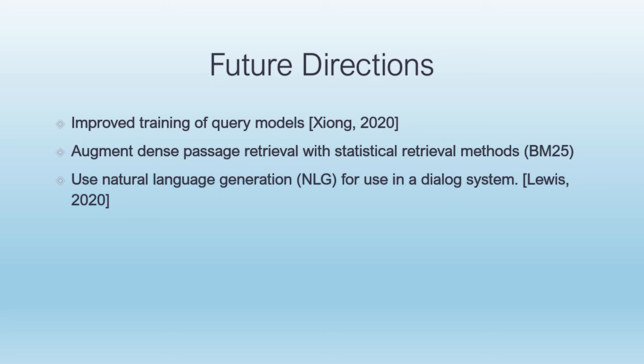Achieving state of the art is never a done deal in NLP. Since the Karpukhin paper was released, there have been some improved training of query models using embedding models rather than BM25 to identify passages that are near misses. It is also possible to augment dense passage retrieval with statistical retrieval methods to answer some kinds of queries, and to use natural language generation for use in a dialogue system. These are all directions that research is taking now.